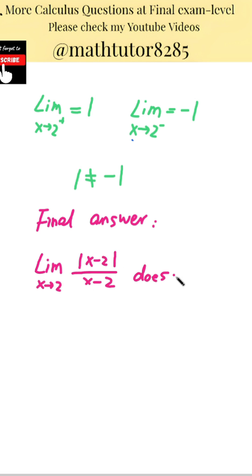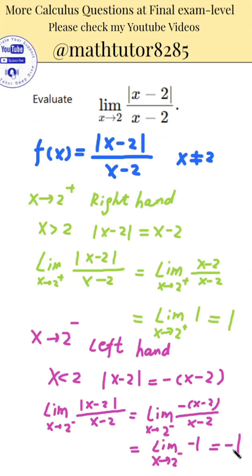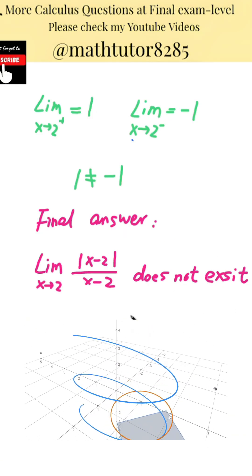This kind of limit problem is a great way to check your understanding of how absolute value behaves. Here's what you should always remember: the absolute value of something like x minus a constant will behave differently on each side of that constant. For example, to the right of 2, x minus 2 is positive. But to the left of 2, it's negative. So the absolute value becomes the opposite of that expression.